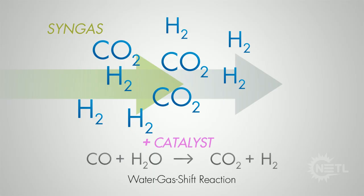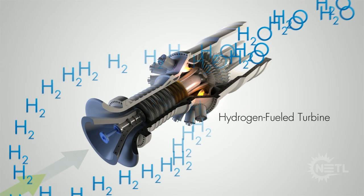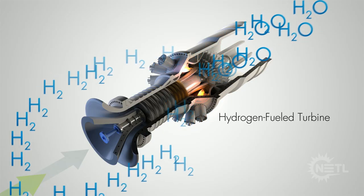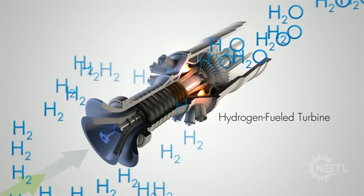Catalysts are used to increase the speed of chemical reactions. DOE's vision is to use hydrogen to generate electricity in a power plant with only water going up the stack. Coal can indeed be used to make clean electricity.